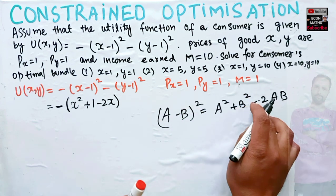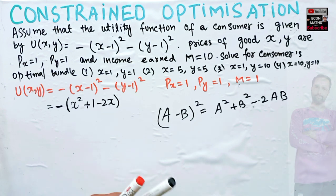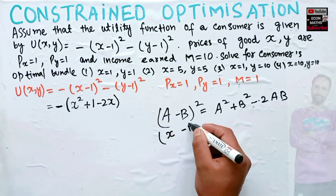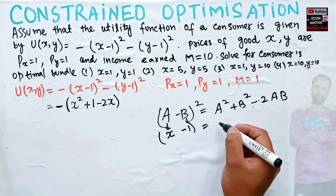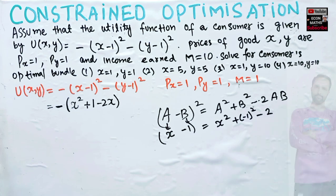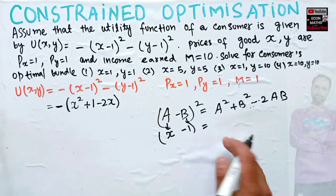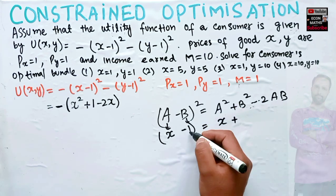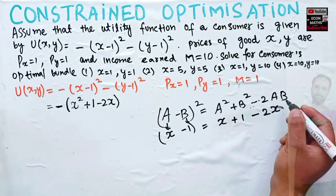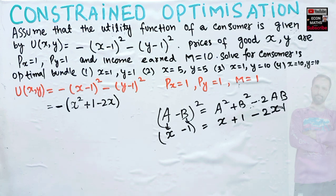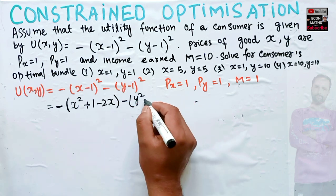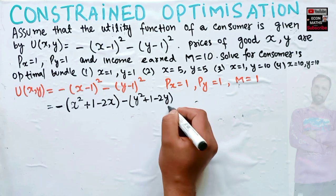This is the formula learned in earlier classes. Here a = x and b = 1, so we have a squared = x squared, plus b squared = 1 squared, then minus 2 times a times b = minus 2x times 1. Similarly, (y minus 1) squared = y squared plus 1 squared minus 2y.